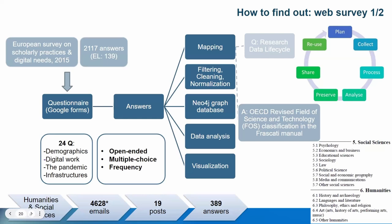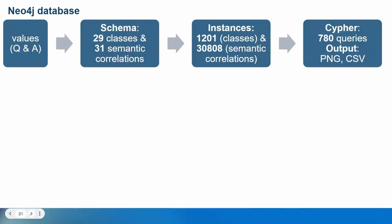The research complexity was evident from the variety of scientific fields and diverse digital methods and tools used. To capture all underlying semantic relationships, graphs were chosen for representation. The answers were filtered, cleaned, normalized, and fed into a Neo4j database for analysis and visualization. A schema was created with 29 classes and 31 semantic relations, resulting in almost 1,200 class instances and 300 semantic relations. Cypher, a query language for graph databases, was used, and a total of 780 queries were run, producing PNG and CSV output.